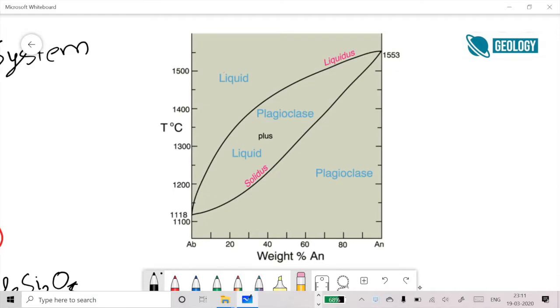Let's imagine you have an original plagioclase which has a composition of 60% weight anorthite. Somewhere here, this composition lies over here. This is what we call the bulk composition of my system. All the liquid that we have, if I take it as one big chunk, has a composition which is 60% anorthite. Now what I am going to do is cool my liquid.